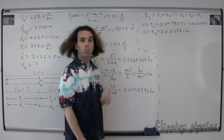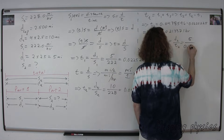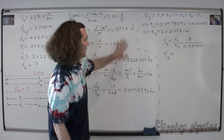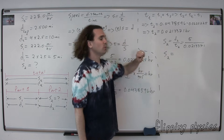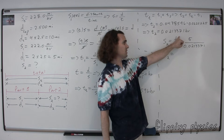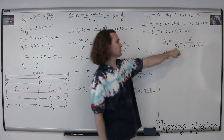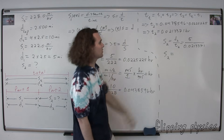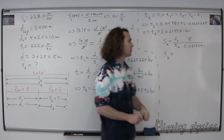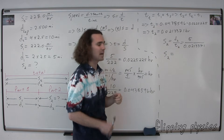Now that we have the time for part two, we can go back to the original equation: speed equals distance over time. We know the distance for part two and the time for part two, so we can substitute and solve. The speed for part two is just the distance for part two divided by the time for part two. So the average speed for part two is 5 miles divided by 0.0213371 hours.